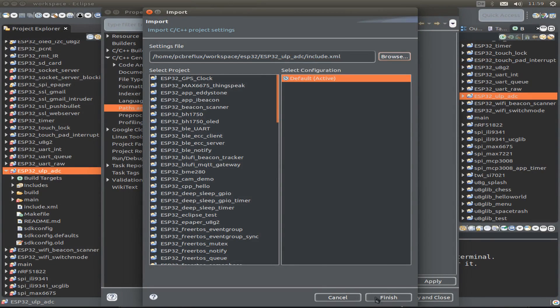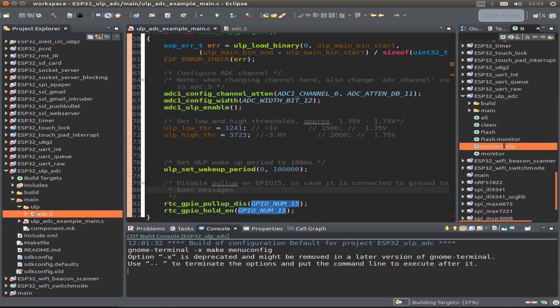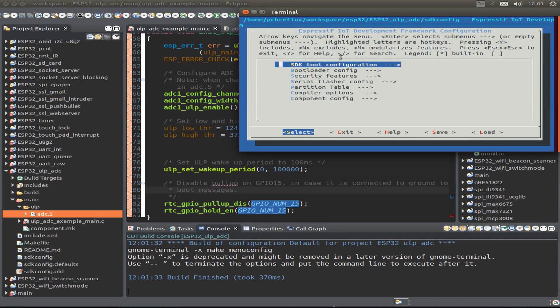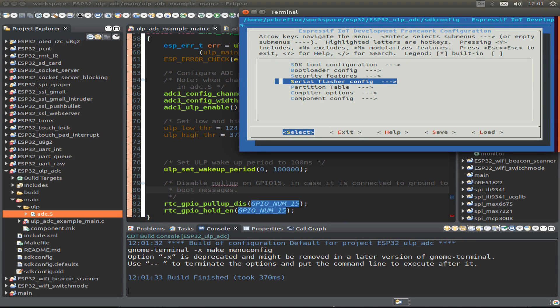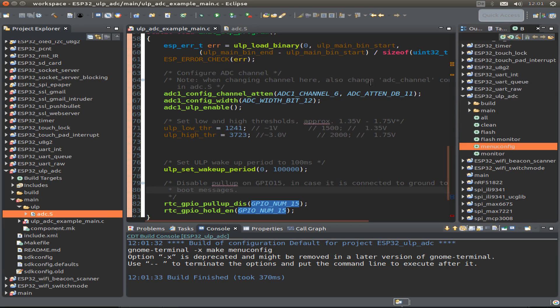And then we can start by pressing make menu config. And I only configure the serial flasher so we don't use the very slow speed. I use the highest speed that I can use.